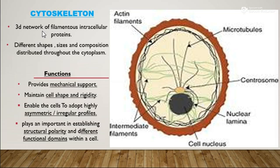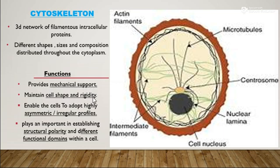The cytoskeleton is a 3D network of filamentous intracellular proteins. It has different shapes, size and composition distributed throughout the cytoplasm. It has actin filaments, microtubules and intermediate filaments as examples. The major functions of the cytoskeleton are: it provides mechanical support, maintains cell shape and rigidity, enables the cell to adopt highly asymmetric or irregular profiles, and plays an important role in establishing structural polarity and different functional domains within a cell.